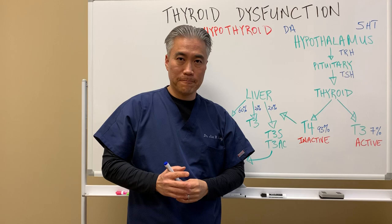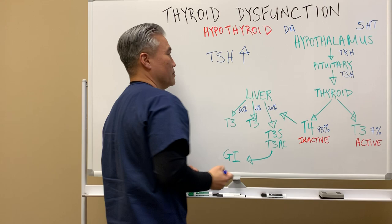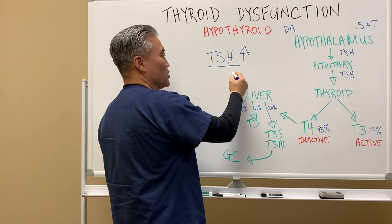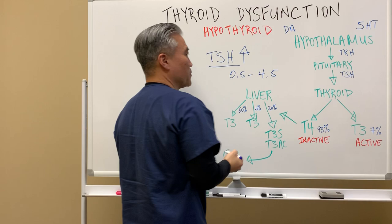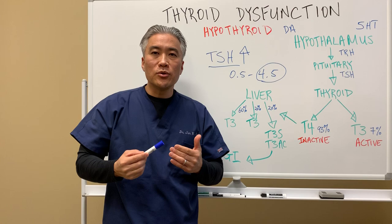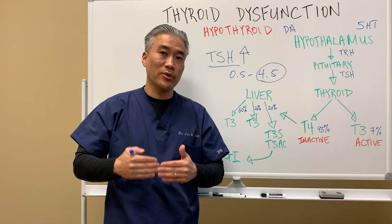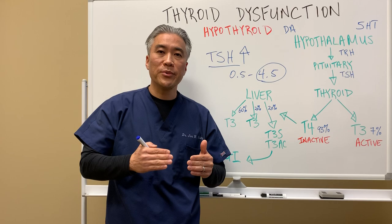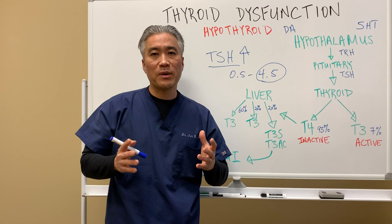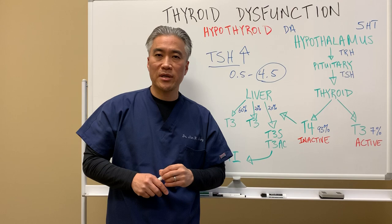When you have hypothyroid, TSH will rise. Lab ranges typically go from about 0.5 up to 4.5 — anything above 4.5 would be considered hypothyroid. The underlying cause for most patients in the United States is Hashimoto's thyroiditis, an autoimmune condition affecting the thyroid, which globally could be up to 80–90% of hypothyroid cases. Globally, iodine deficiency is more common.